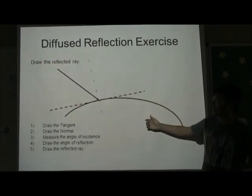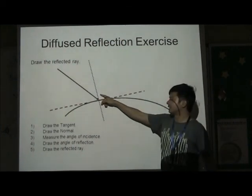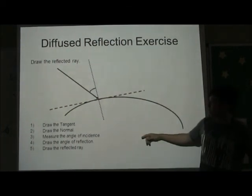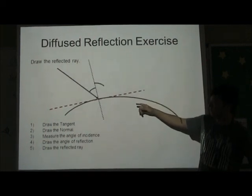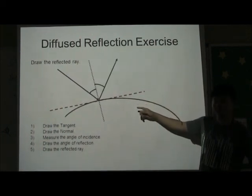Now draw a normal, that is at right angle to the reflecting surface. Measure the angle of incidence, then we draw the angle of reflection, and we draw in the reflected ray.